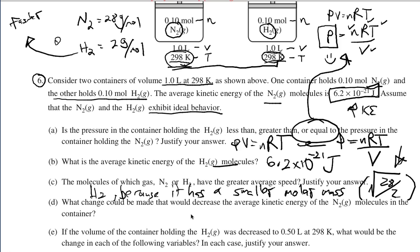What change could be made that would decrease the average kinetic energy of N2 molecules in the container? Kinetic energy is only proportional to what? I'm going to give you 5 seconds. 1, 2, 3, 4, 5. You are right. Temperature. So lowering temp would lower KE.